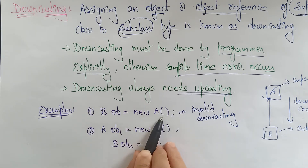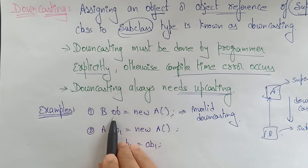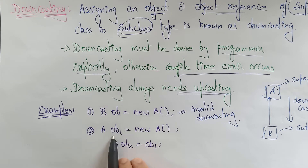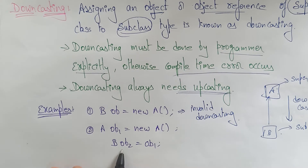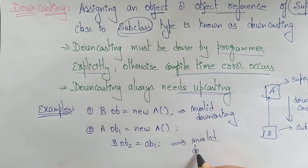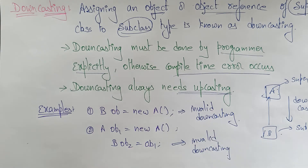Here an object is created of A and assigned to object reference of B subclass. An object of superclass is created and assigned to the reference OB1, and then the superclass object reference is assigned to the object reference of subclass. Is it possible? No, this is also invalid downcasting. So how can I do downcasting? Is there any way? The programmer explicitly has to mention it.